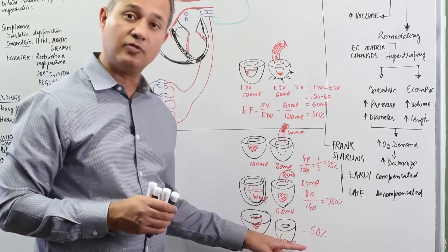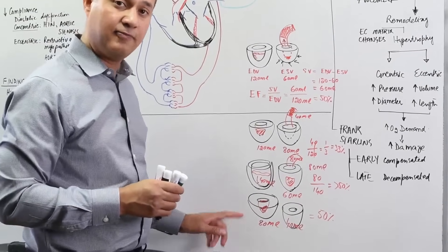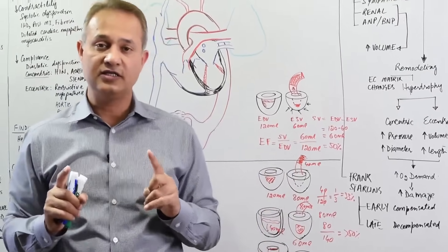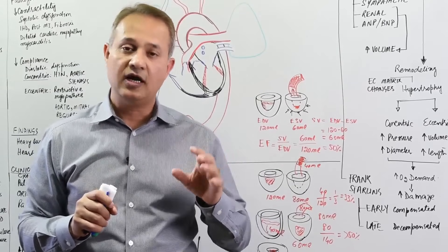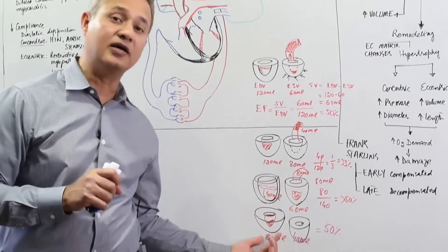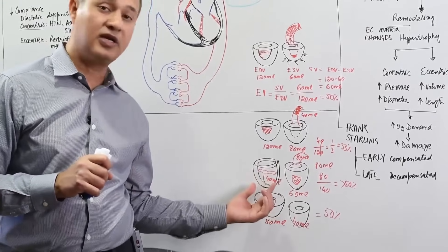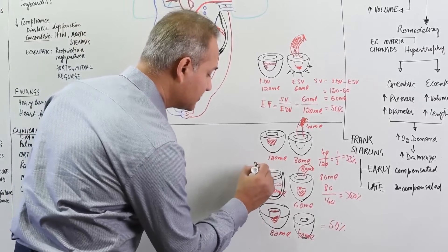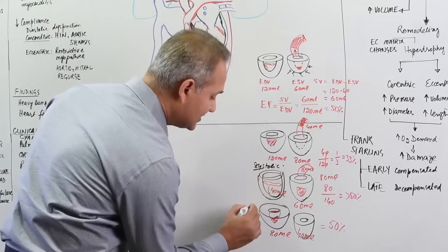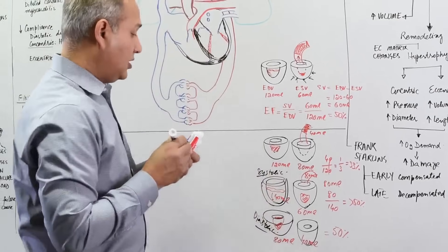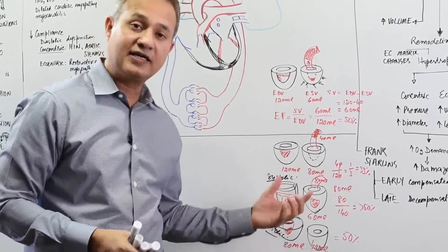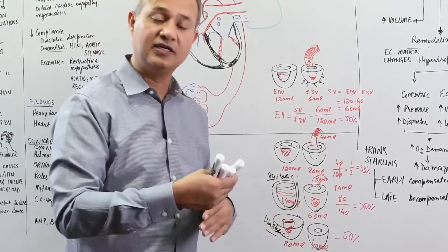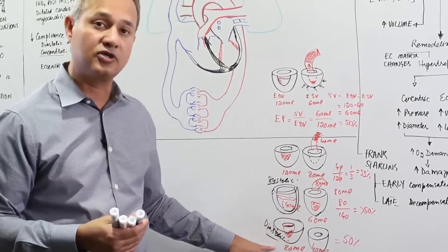The ejection fraction is normal, yet this heart is failing. That is the key takeaway: in diastolic dysfunction, ejection fraction is normal or above normal, but cardiac output is low because there is not enough blood in the heart. Systolic dysfunction is when the heart cannot eject properly. Diastolic dysfunction is when the heart ejects properly but there is not enough blood to eject — that is the example of diastolic dysfunction.